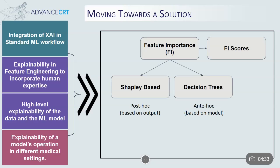As Shapley is a post-hoc feature importance technique — meaning FI scores are calculated after a model is trained — it is applied after training and the FI scores generated will be indicative of how impactful a feature is in causing a change in the model's output. On the other hand, FI scores determined by decision trees are ante-hoc, meaning the FI scores are automatically calculated when the decision tree was learning from the data, and so they describe the inherent operation of the model and indicate how important a feature is considered by the model.